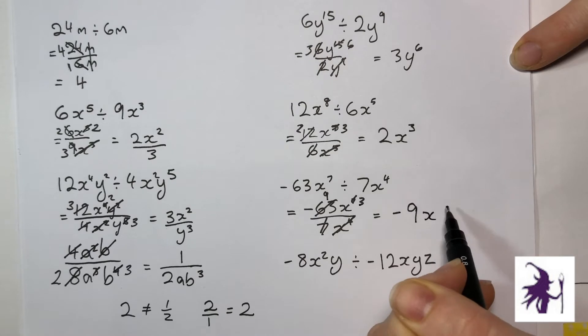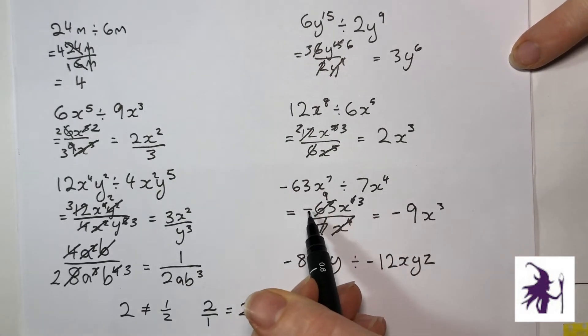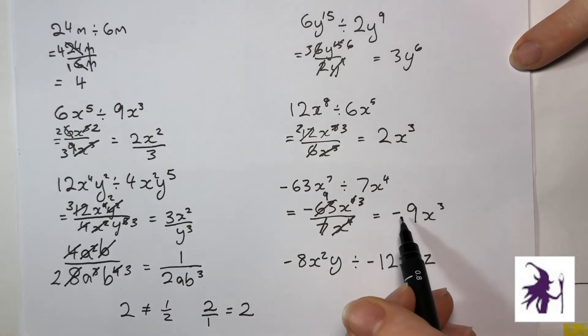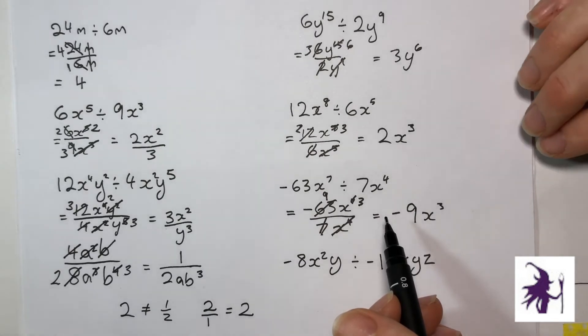Negative 9x to the 3. The fact that there was a negative number there just carried into a negative number onto this top of the fraction and just carried along. Minuses when we're timesing and dividing, all they do is hang around. And if there's 2 of them, they cancel each other out.